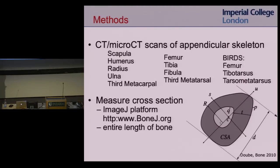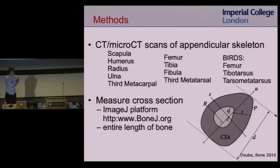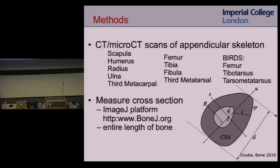We measured cross-sectional properties and developed algorithms on the ImageJ platform — an open-source NIH image visualization kit — to look at cross-sectional area, the centroid, the thickness of the bone, the diameter by rotating calipers, the moment of area (maximum, minimum, and polar moment of area). This is freely available as BoneJ. We can measure these cross-sectional properties along the entire length of the bone from our CT scans.